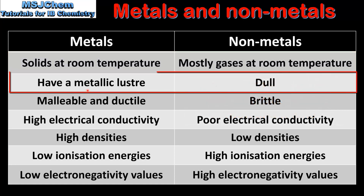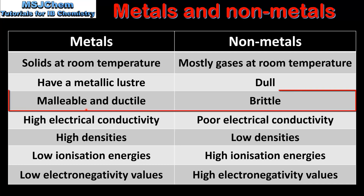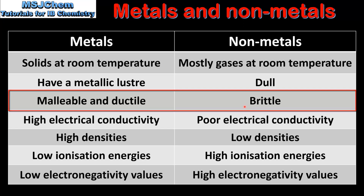Next we have their appearance. Metals have a metallic luster, which basically means they are shiny. Non-metals, on the other hand, are dull. Metals are malleable and ductile, which means they can be bent into shape and made into wires. Non-metals, however, are brittle.